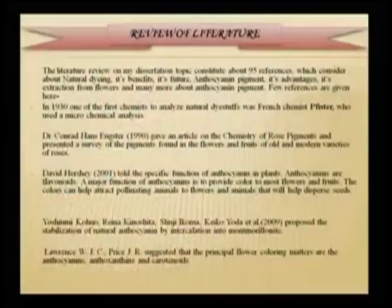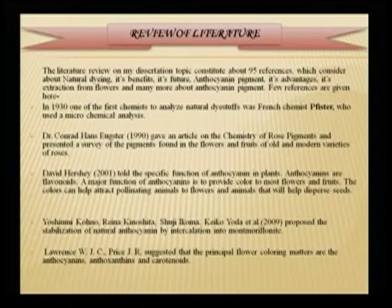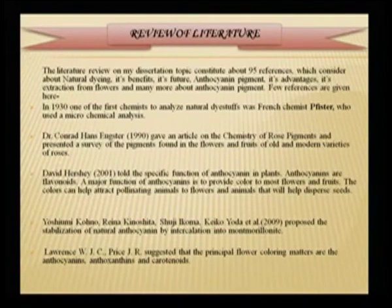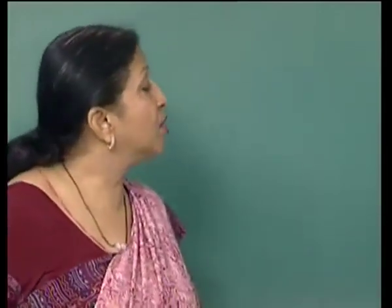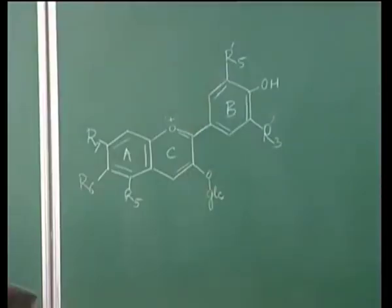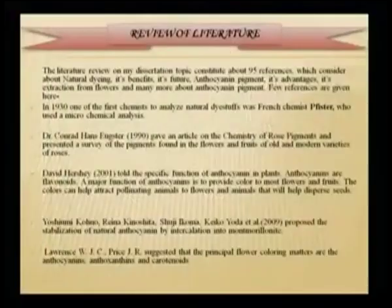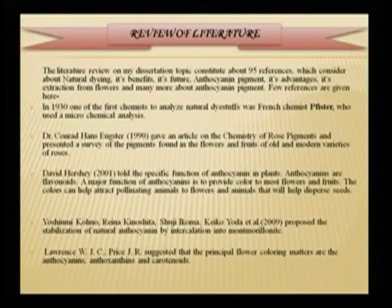Lawrence et al. found that the principal coloring matter are anthocyanins, anthoxanthines and even some carotenoids. Similarly, a Japanese group — Yoshimui — proposed that stabilization of natural anthocyanin can be done by intercalation with montmorillonite. They were working only on how to trap this dye, because as you know, due to the positive charge on oxygen, it is a very pH-sensitive dye. This pH sensitivity was discussed in detail in the last lecture, and is why anthocyanin dyes were not considered for textile dyeing so far.